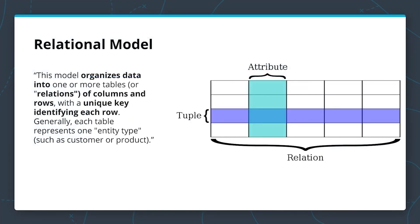The relational model organizes data into one or more tables, or relations, of columns and rows with a unique key identifying each row. Generally, each table represents one entity type, such as a customer or a product. Here is an example: we have our tuple or row, we have our attribute or column, and the whole thing is called a relation or a table.